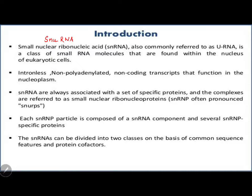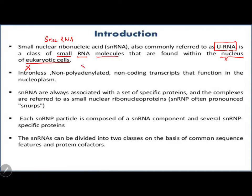It is also commonly referred to as UsnRNA — we don't have documentation on why it is called that, maybe the nuclear U. It is a class of small RNA molecules found within the nucleus of eukaryotic cells. These RNAs don't have introns, don't have poly-A tails, and they don't have exons. So they are not part of the regular mRNA synthesized.